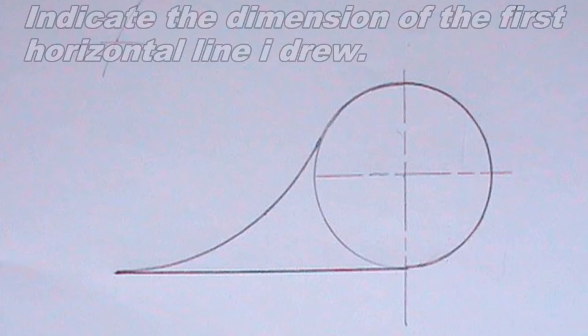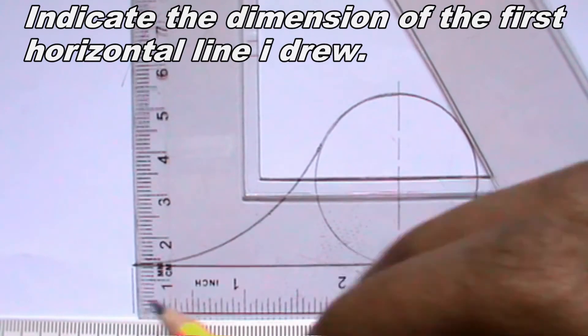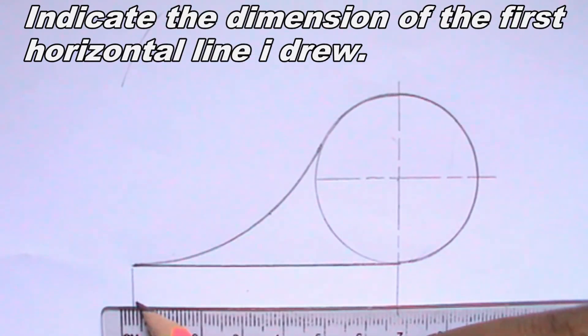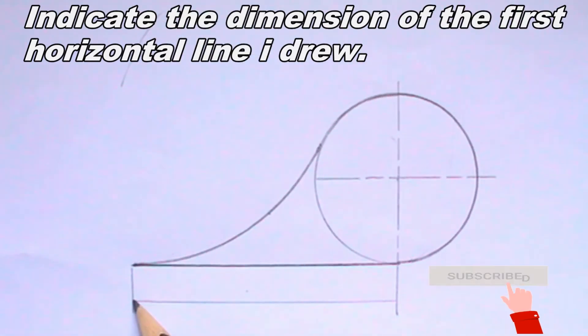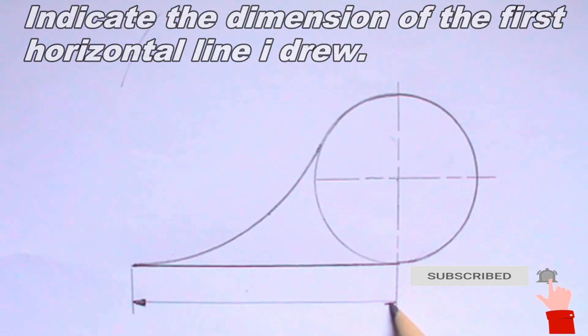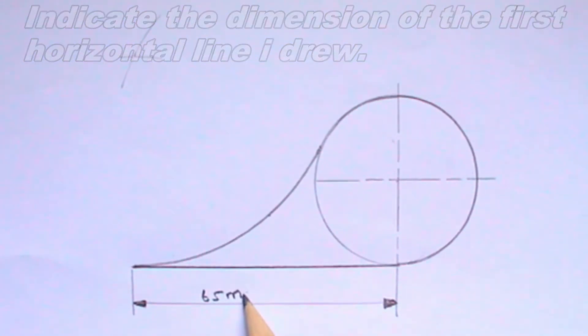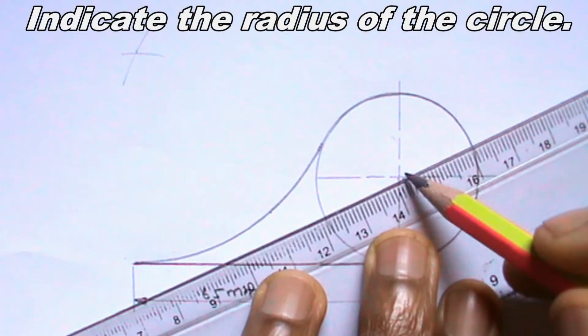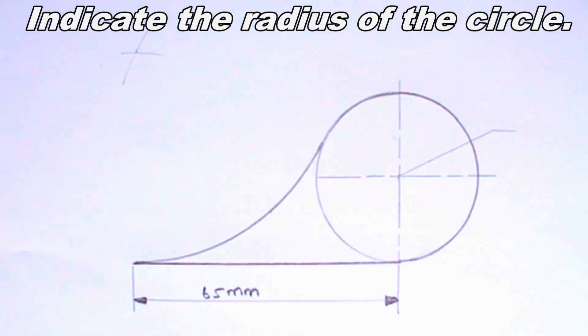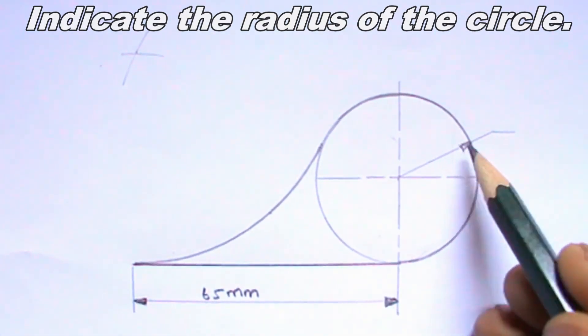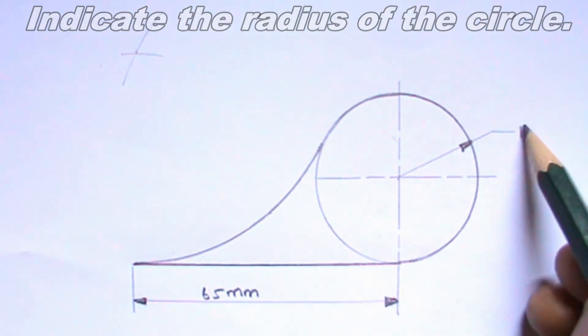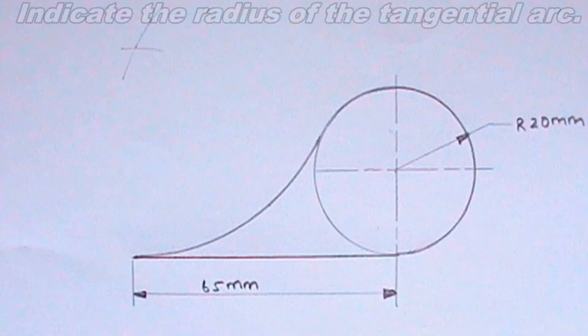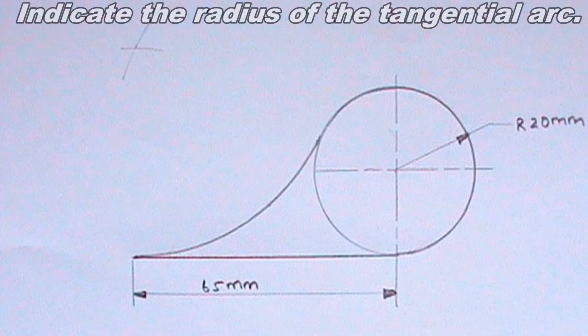I will indicate the dimension of the first horizontal line I drew. I will indicate the radius of the circle. I will also indicate the radius of the tangential arc.